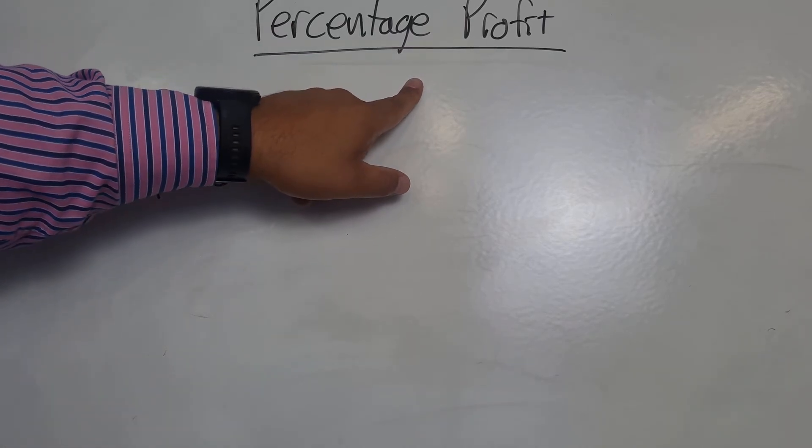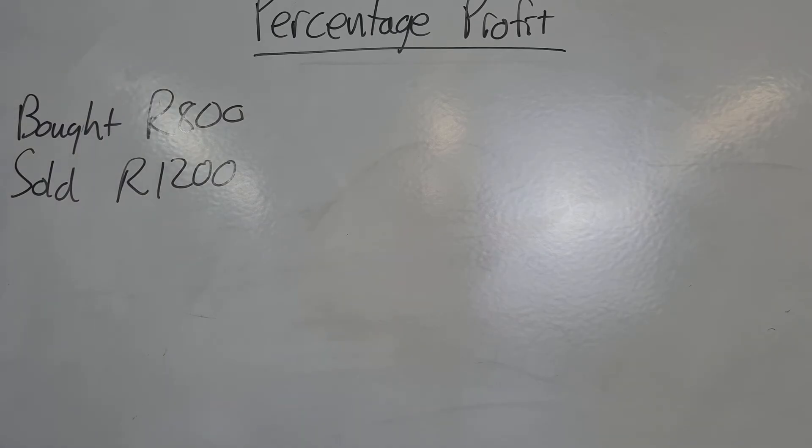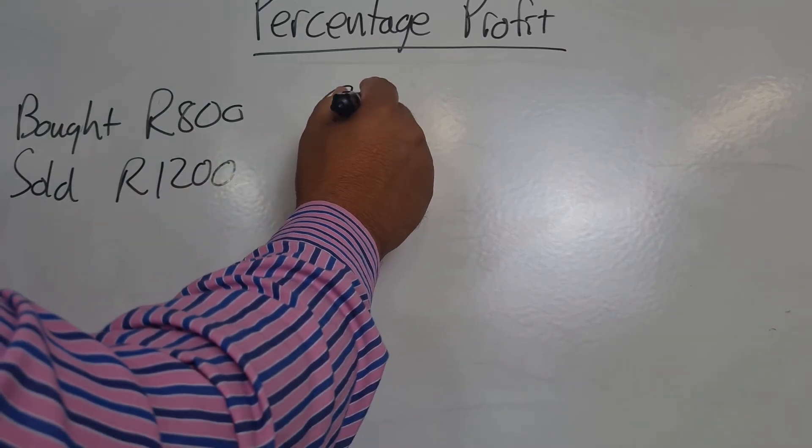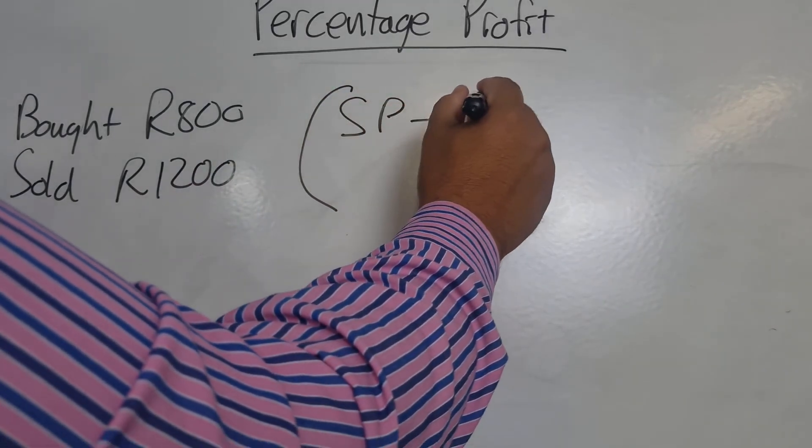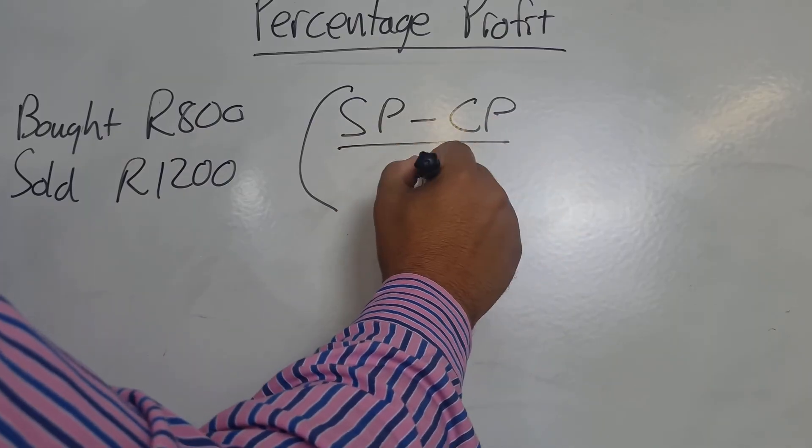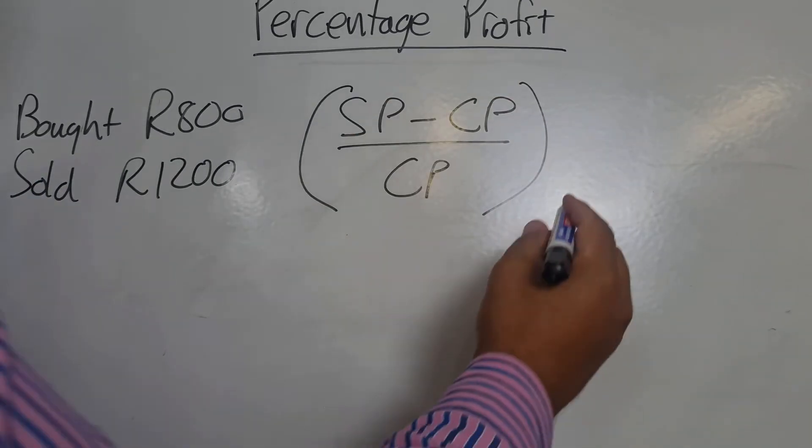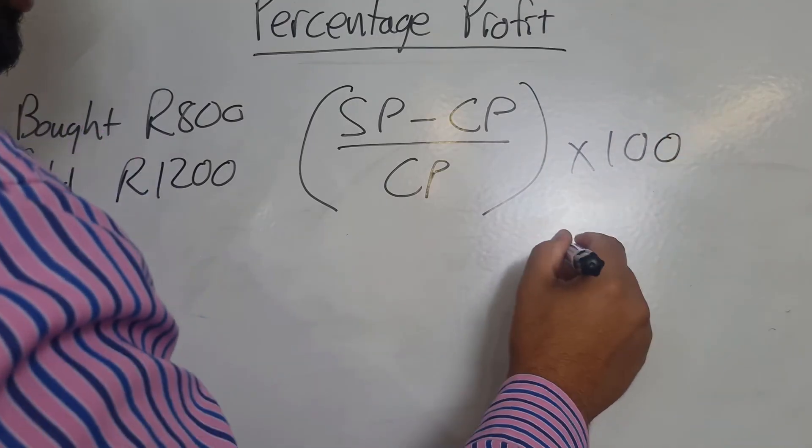So what you can do, again slightly differently to what I showed you earlier, is to use this formula: we can take our selling price, subtract that from the cost price, and divide it from the cost price. And then whatever our answer is there, we're going to multiply it by 100 in order to get our percentage.